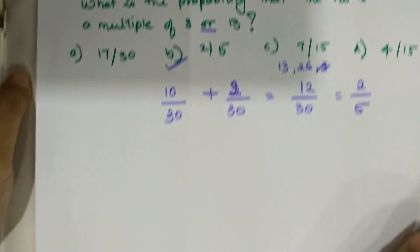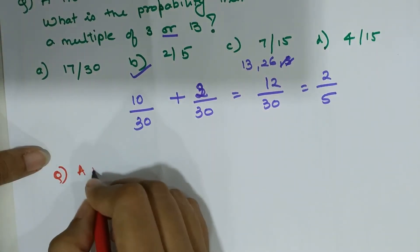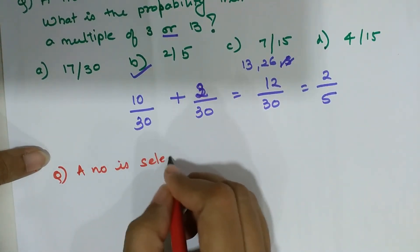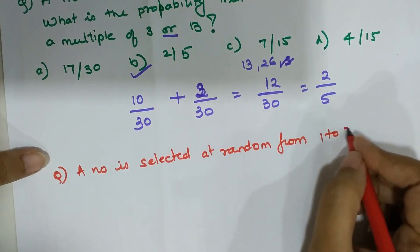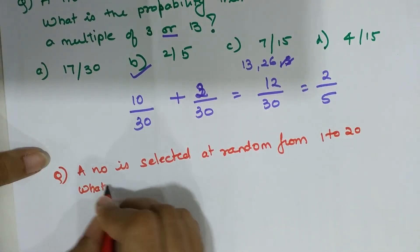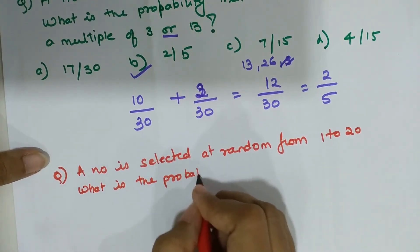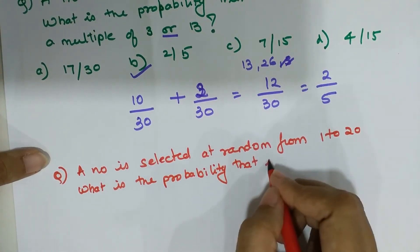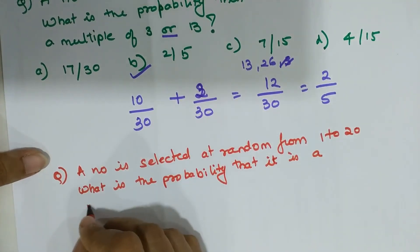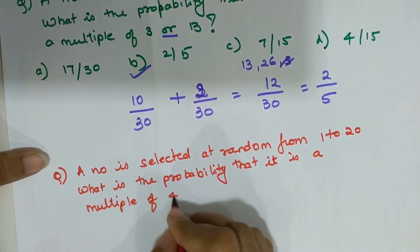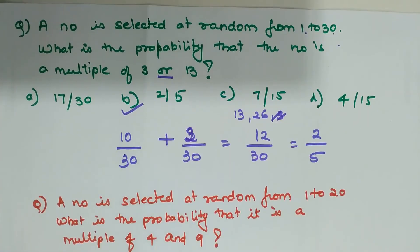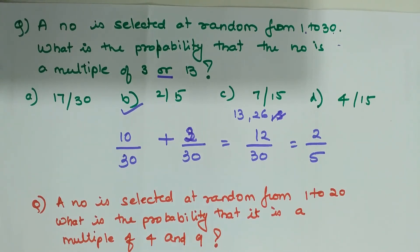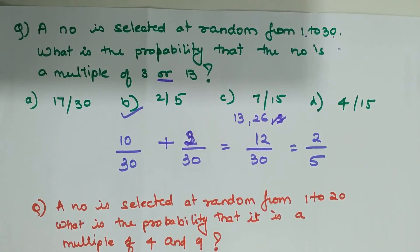As promised, here is a practice question for you to solve: a number is selected at random from 1 to 20 — what is the probability that it is a multiple of 4 or 9? Write your answer in the comments below. That's it for this video; if you like the way I'm explaining please hit the like button so I can keep making more videos. I will see you in the next one. Thank you.